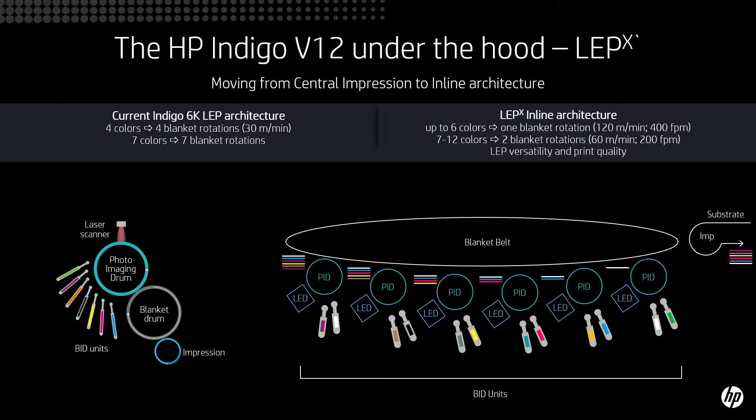With the LPX, the V12 architecture, we modified the architecture to an inline configuration. The LPX will have six different sub-engines as you can see here in the image, and for each sub-engine you will have two color stations. So every rotation of the blanket you will be able to produce a label with up to six colors without losing speed.